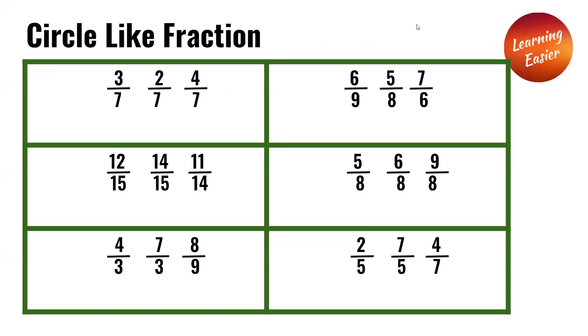Circle like fractions. 3 over 7, 2 over 7, and 4 over 7 are like fractions because all three of them have the same denominator, which is 7.